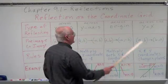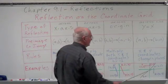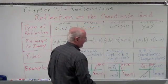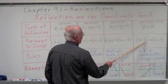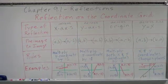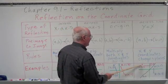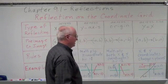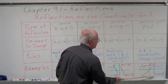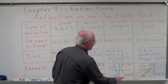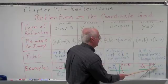Another reflection on the coordinate grid is across the line y = x. That line has a positive slope of 1 going diagonally. The rule is that the x- and y-coordinates change places. So A at (−3, 3) becomes A prime at (3, −3), crossing from the second quadrant across that line. B at (1, 3) becomes B prime at (3, 1). It's just a fold on that line.